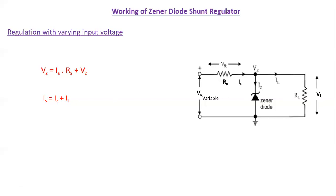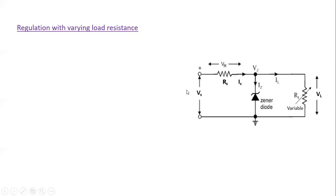Next we can see the case when the load resistance changes, such as when we connect an electrical appliance. This is again the same circuit diagram, except that here VS is fixed and the load resistance is varying. We can again write the basic equations: IS is equal to IZ plus IL, and VS is equal to IS·RS plus VZ. Since VS is fixed, IS is also fixed — there is no variation.